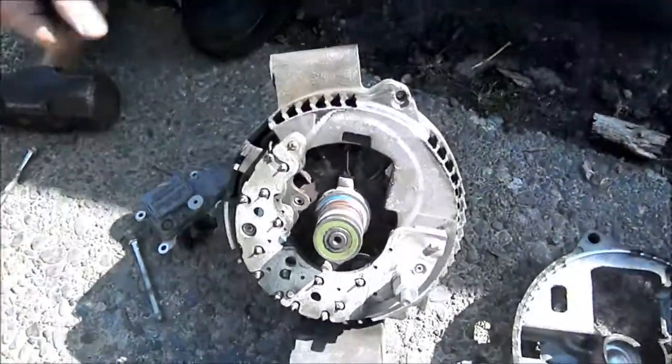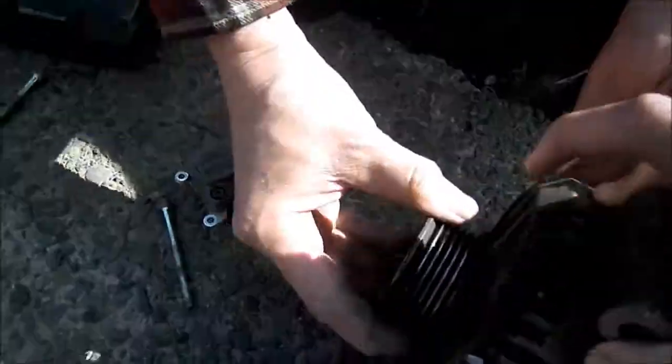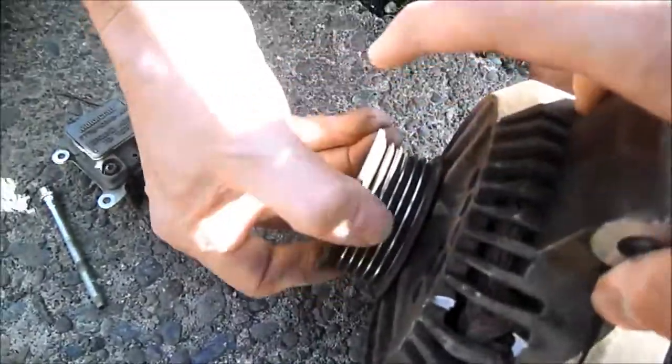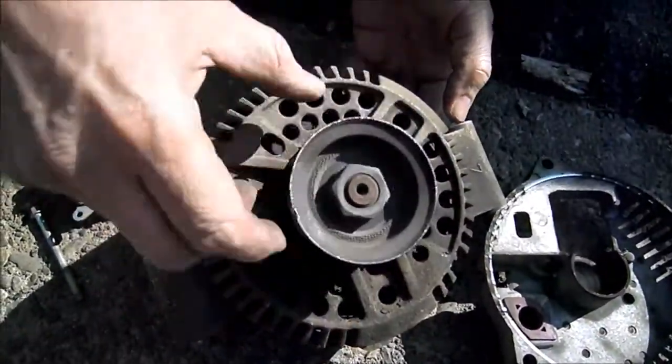So pretty much what an alternator does is there's a timing belt that drives the pulley. The timing belt drives, accessory belt drives the front pulley.